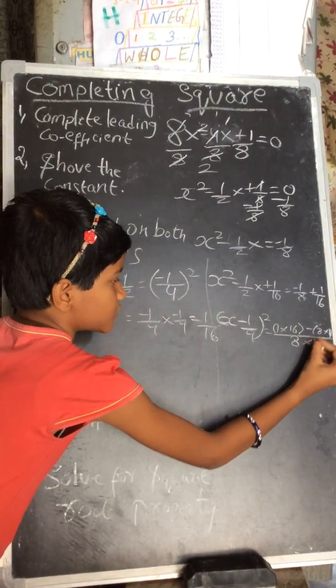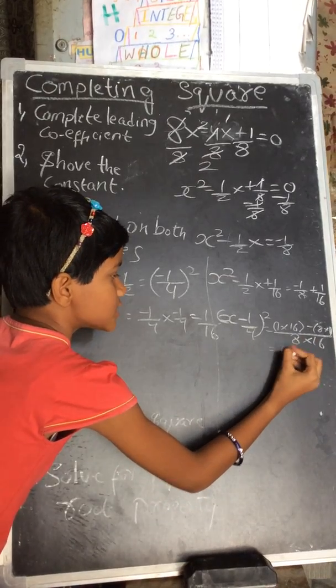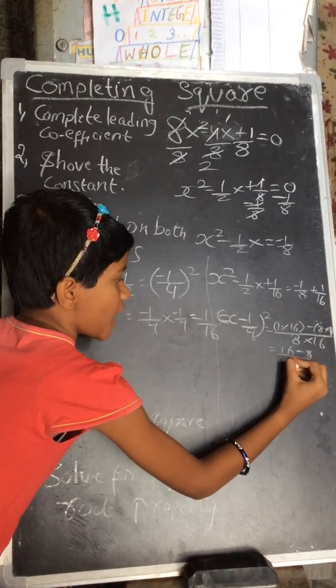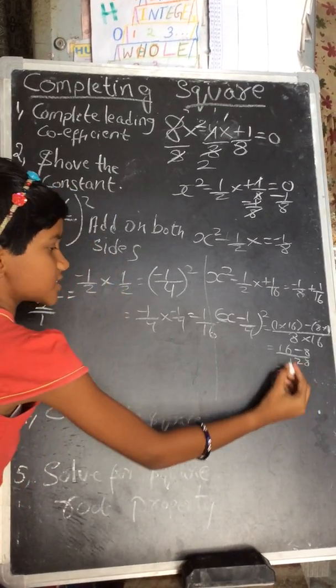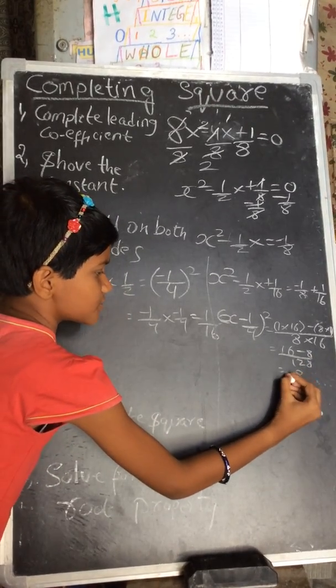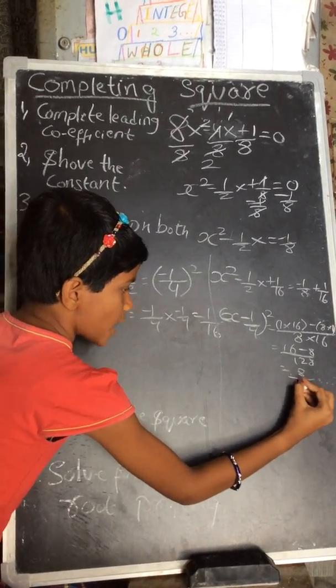That equals 16 minus 8 by 128. That equals 8 by 128, which simplifies to 1 by 16.